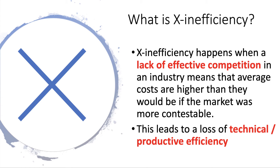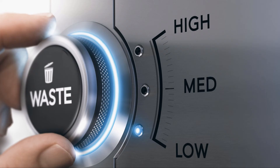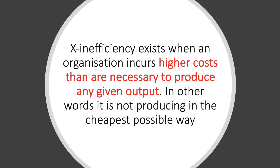So what is X-inefficiency? It's when a lack of genuine, effective day-to-day competition in a market means that the average cost is higher than would be the case if the market was more contestable. The result is a loss of technical productive efficiency. X-inefficiency is really all about waste in the production process. The key definition: X-inefficiency exists when any organization incurs higher costs than are necessary to produce any given output — it is not producing or supplying in the cheapest, most cost-effective way.